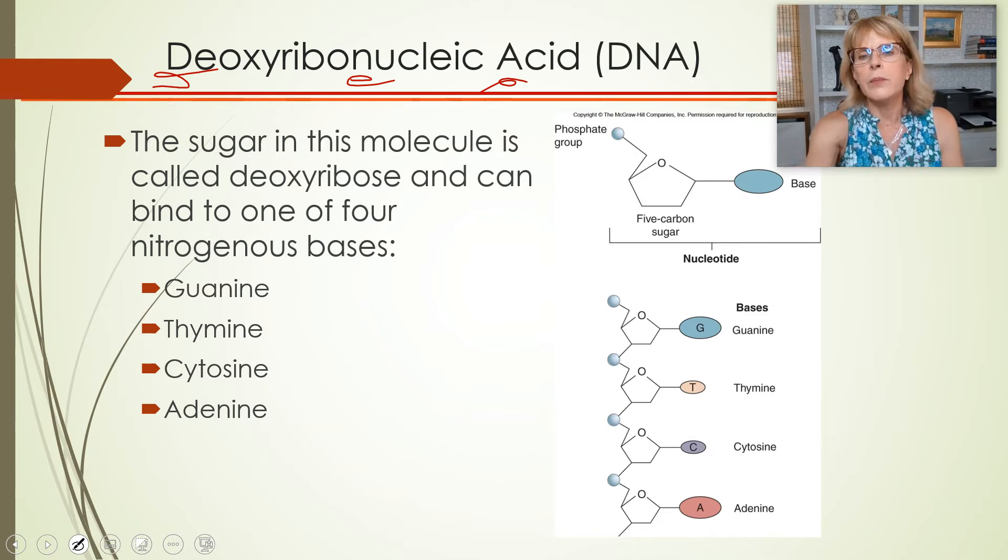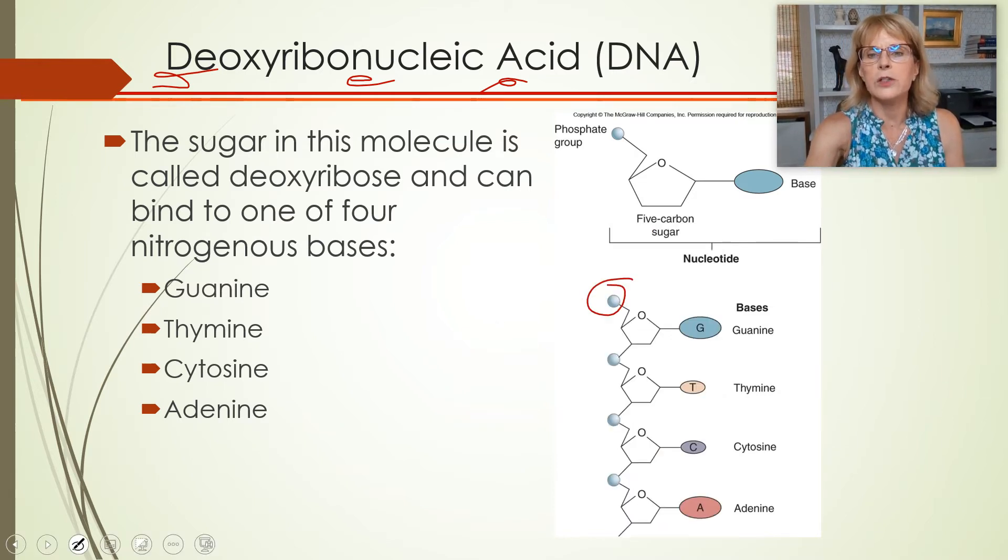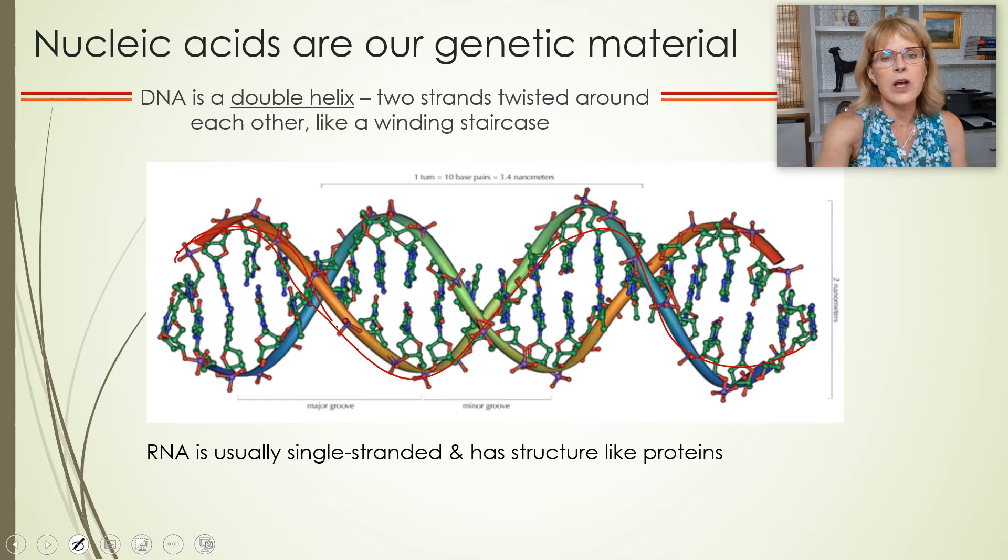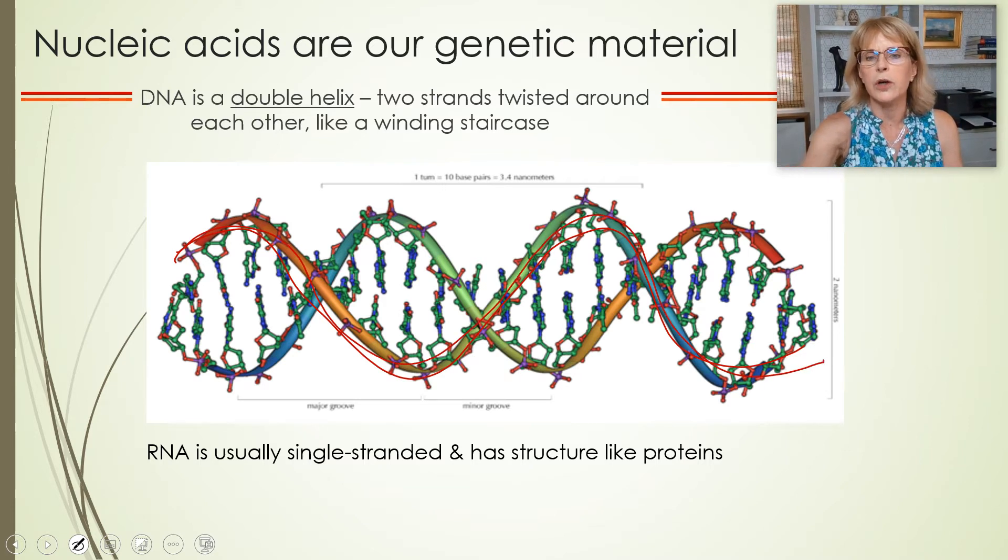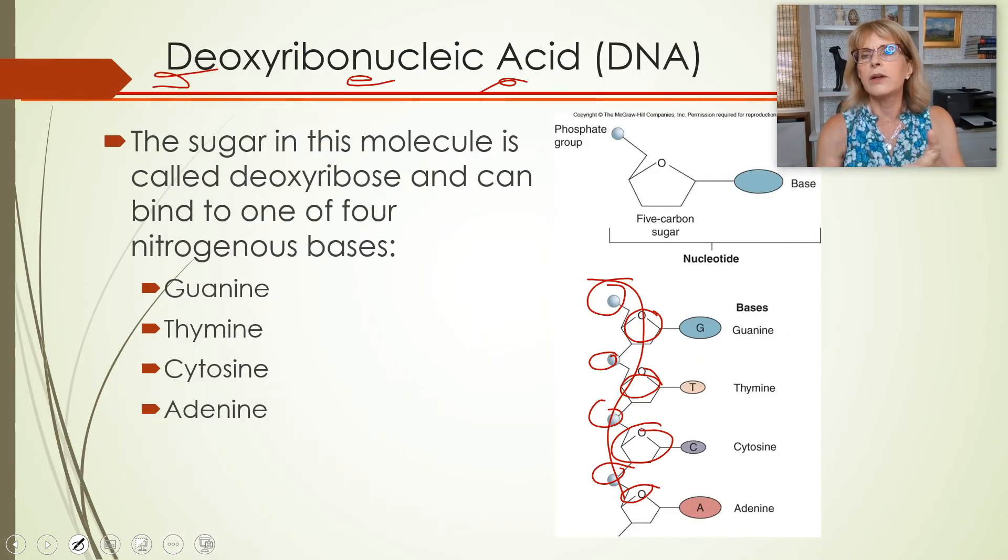Deoxyribonucleic acid. Remember it's the phosphate and the sugar, phosphate sugar that are tied together by covalent bonds that make up the backbone of the DNA. Let's go back here. This is phosphate sugar, phosphate sugar, phosphate sugar, and the nitrogenous bases are hanging off towards the other strand of DNA in the double helix.